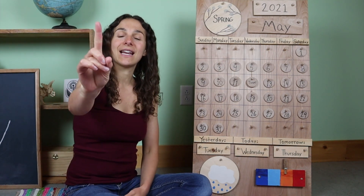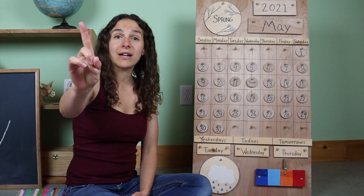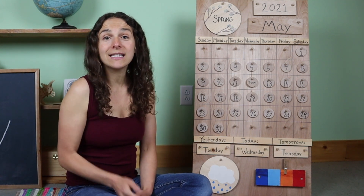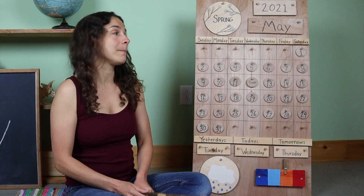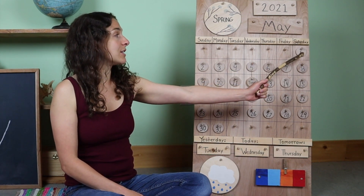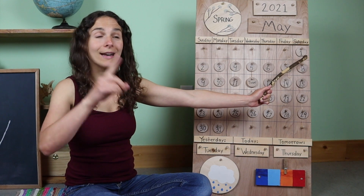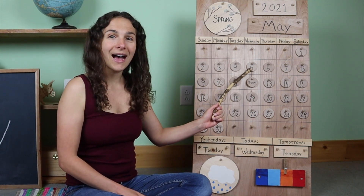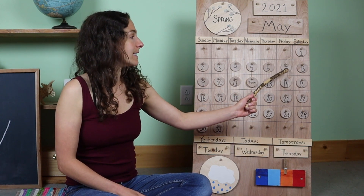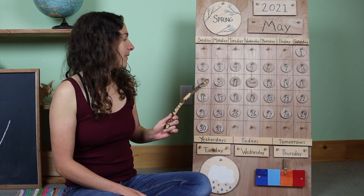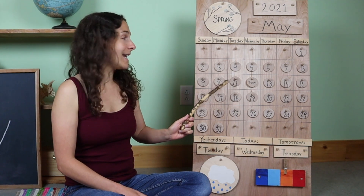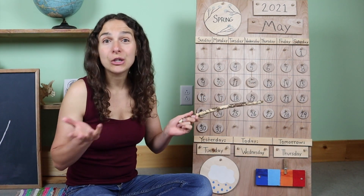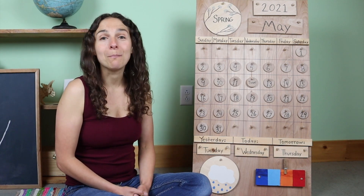Now let's get our counting fingers ready and give them a little stretch to warm them up. Let's count all of the days that we've had so far in the month of May. We're going to start off at the top with the number 1, 2, 3, 4, 5, 6, 7, 8, 9, 10, 11, 12. We have had 12 days so far in the month of May.